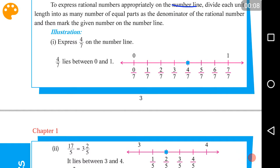So, to express rational numbers appropriately, what we have to do is divide each unit length into as many number of equal parts as the denominator of the rational number. For example,